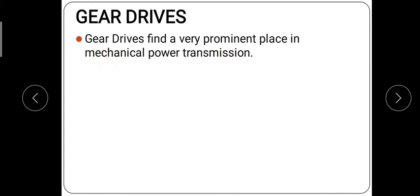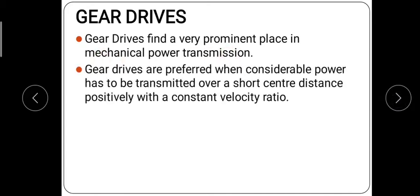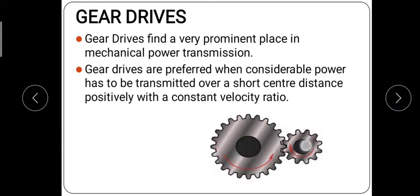The gear drive transmits power for a shorter center distance, positively, and with a constant velocity ratio. Whatever velocity ratio is maintained from one gear to another gear is kept constant. You can see that there are two gears meshing with each other — this is the larger gear, this is the smaller gear, also known as the pinion. These two are meshing with each other through their teeth, known as gear teeth.